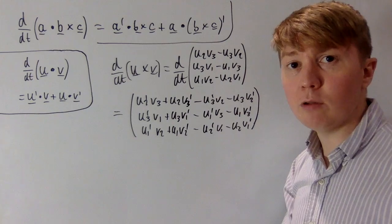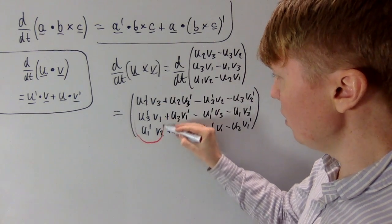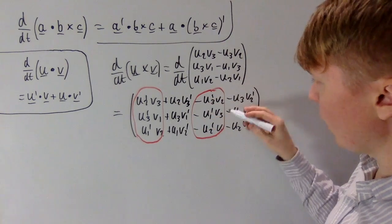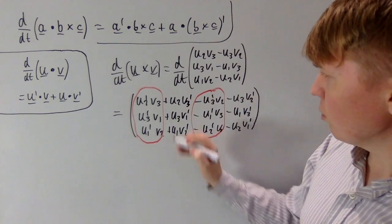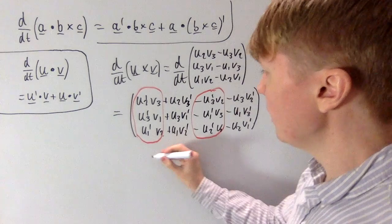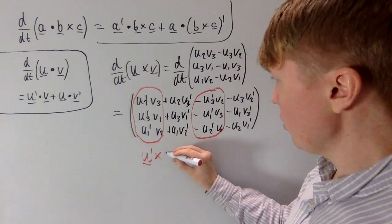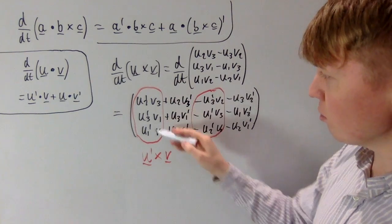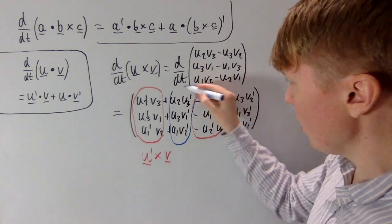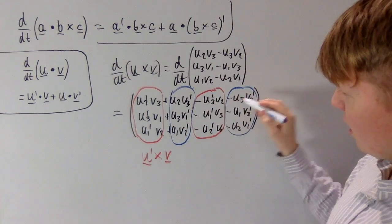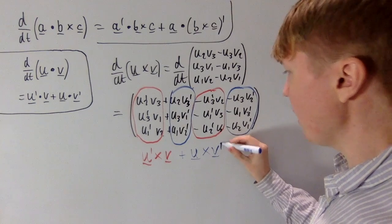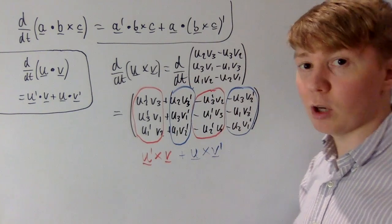We can regroup these terms just as before. Looking at all the u-prime terms across the three entries and subtracting the corresponding u-prime terms, this looks exactly like the definition of the cross product — it is u' cross v. Similarly, all the v-prime terms together give u cross v'. So the derivative of the cross product is u' × v + u × v', which is again beautifully analogous to the product rule for real-valued functions.